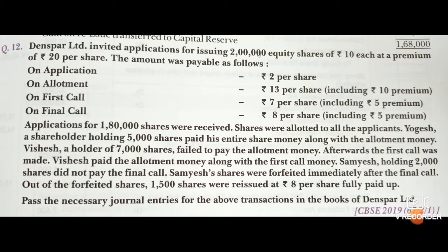Applications were received for 1,80,000 shares. The company issued 2 lakh equity shares, but applications were received only for 1,80,000 shares, meaning shares were under-subscribed. Issue shares are more and applied shares are less. Shares were allotted to all the applicants. Yogesh, a shareholder holding 5,000 shares, paid his entire share money along with the allotment money.